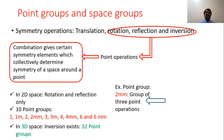These point operations are important because a suitable combination of these point symmetry operations gives symmetry around a point in a lattice. In other words, the group of point operations — rotation, reflection, and inversion — collectively determine the symmetry of a space around a point in a lattice.